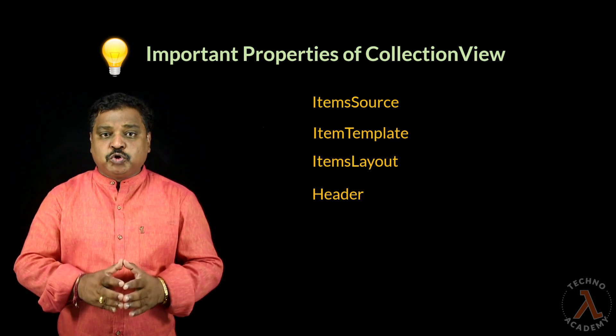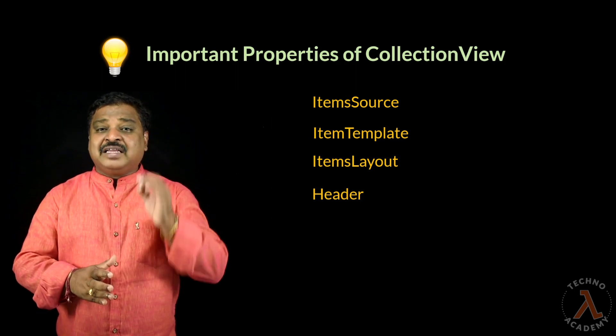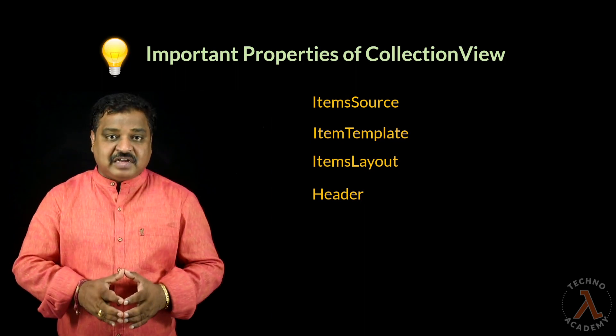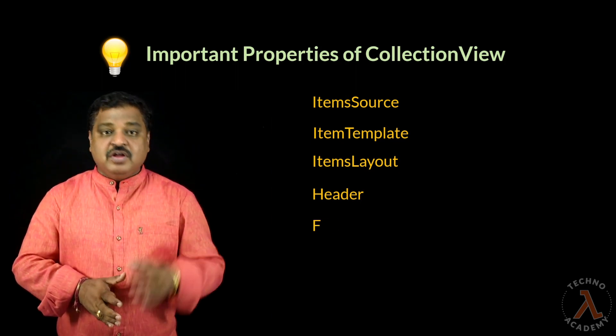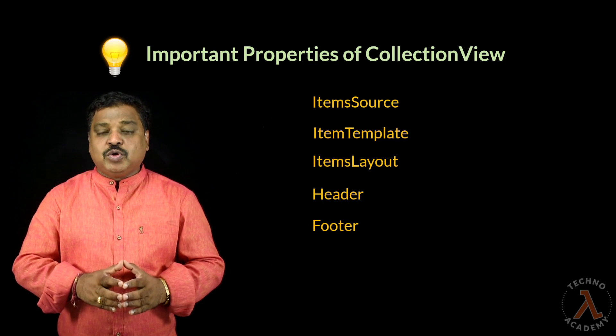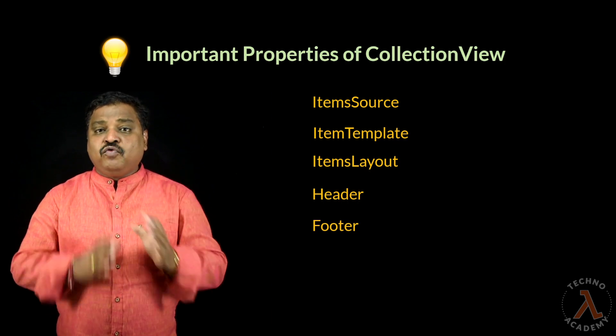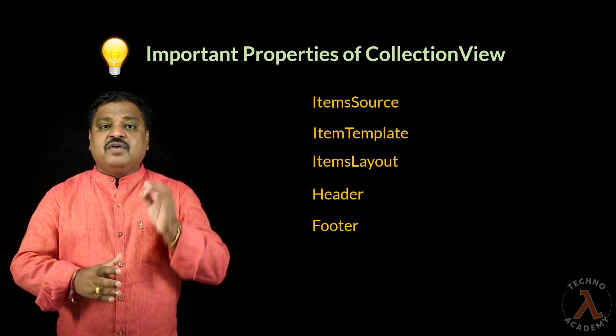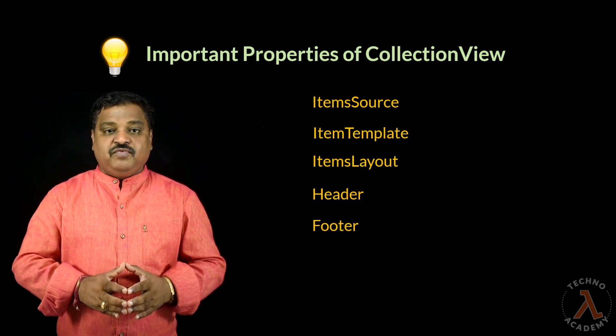ItemsLayout is used to specify the orientation of the list items layout — that is, whether items are displayed as a vertical list or horizontal list. Header is used to specify the header block for the Collection View.